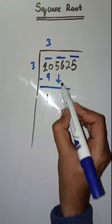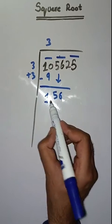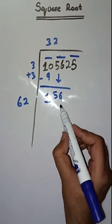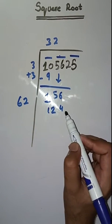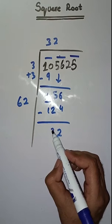Next pair is 56. We bring it down. Here we do 3 plus 3 which is equal to 6. So we take a number 2. 62 times 2 is 124. We subtract, we get 6 minus 4 is 2, and 5 minus 2 is 3.